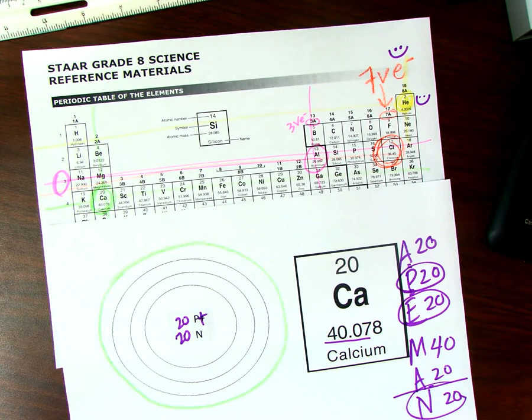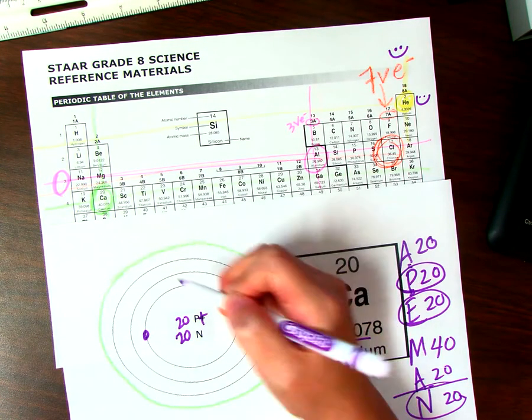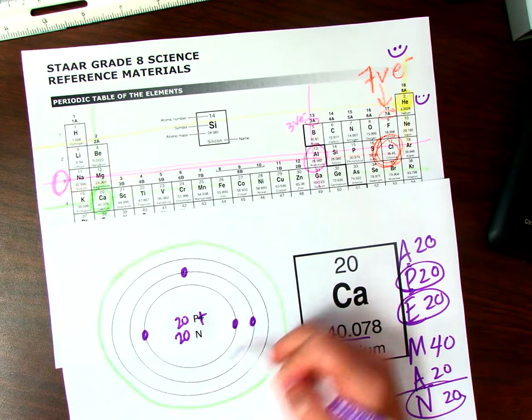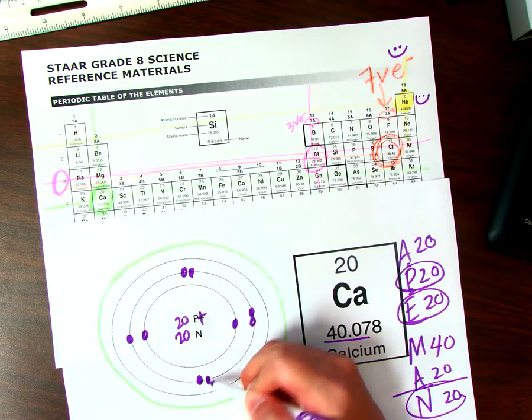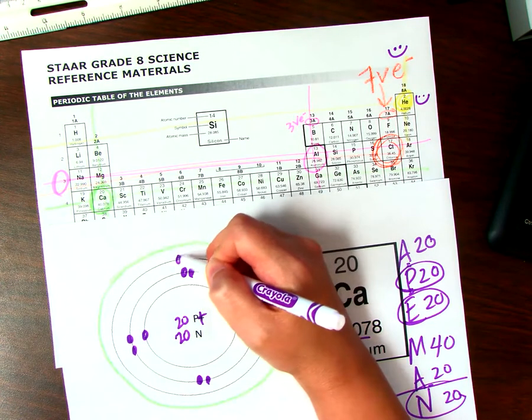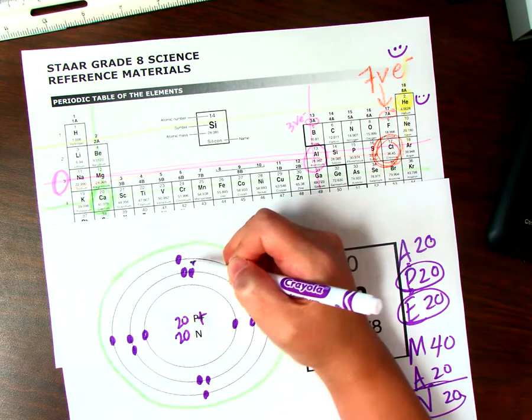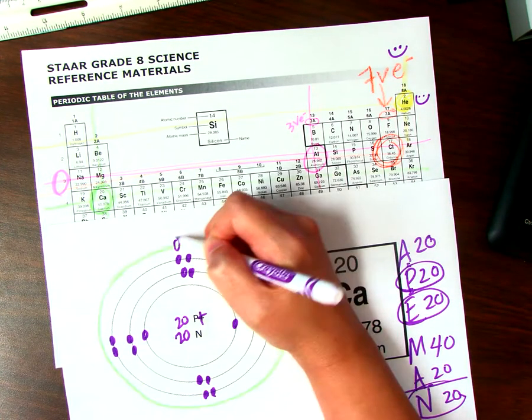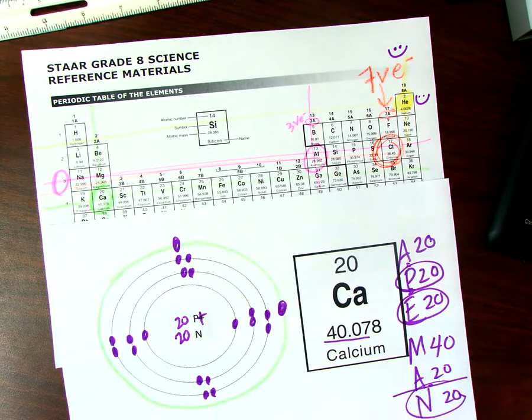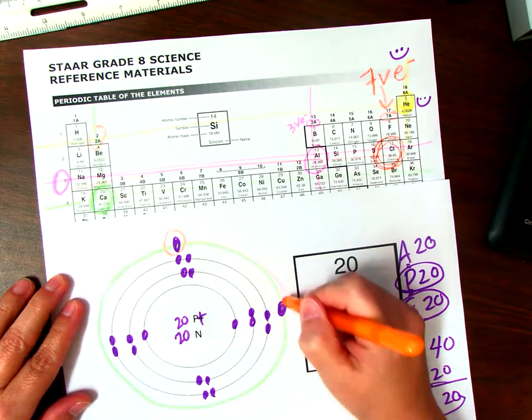And we should have 20 electrons. 1, 2, 3, 4, 5, 6, 7, 8, 9, 10, 11, 12, 13, 14, 15, 16, 17, 18, 19, 20. So we have group two, so there should be two valence electrons. Yep.